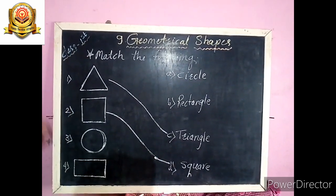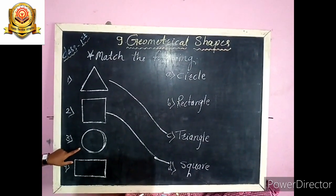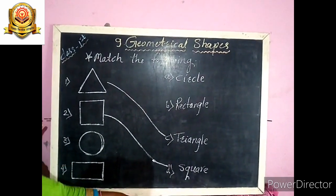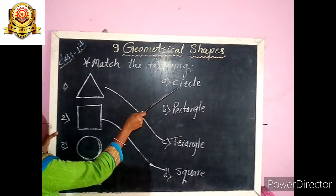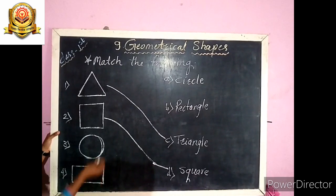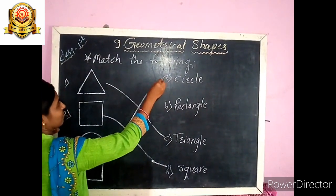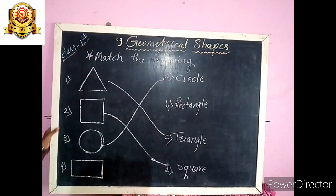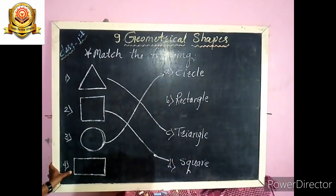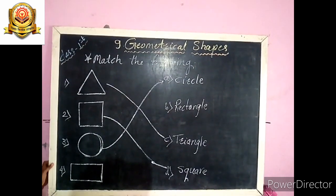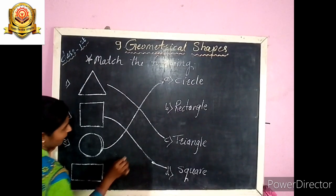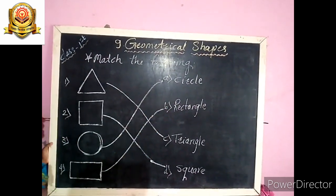Third one — circle. Where is the spelling of circle? C-I-R-C-L-E — circle. Match the circle with its spelling. And last one — this is a rectangle. Where is the spelling of rectangle? R-E-C-T-A-N-G-L-E. Match the rectangle with its spelling.